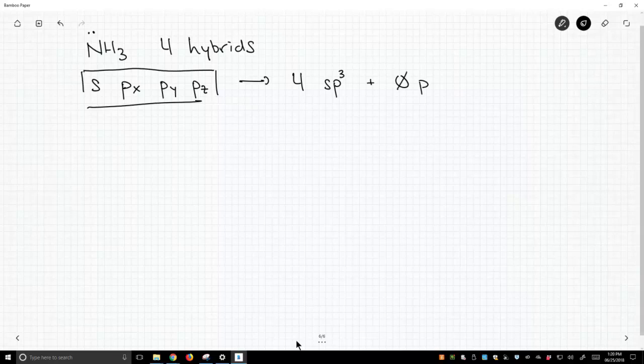We have no leftover p orbitals to worry about. So for sp3 hybridization, any sp3 hybridized atom, not just ammonia, our bond angle is approximately 109 degrees. That was true for our sp3 hybridized methane. It's going to be true for our sp3 hybridized ammonia as well.